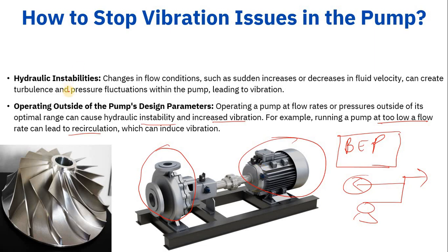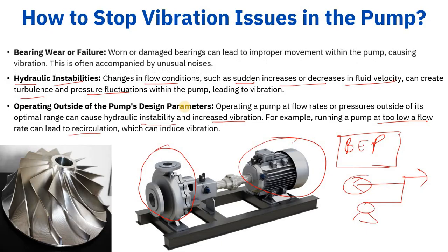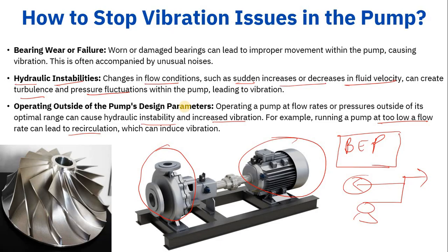Hydraulic instabilities occur when flow conditions change suddenly — such as a rapid increase or decrease in flow velocity — creating turbulence or pressure fluctuations within the pump that lead to vibration. This happens frequently in plants. Bearing wear or failure is another cause: if bearings are worn or damaged, they cause improper movement within the pump, creating vibration often accompanied by unusual noises.